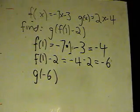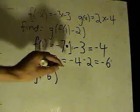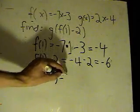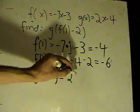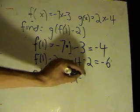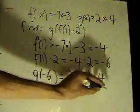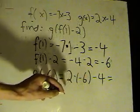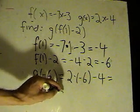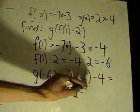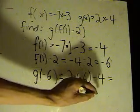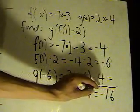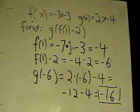So I'm doing this step by step. I have equals, and I put in the unknown: minus 6. So I have 2 times minus 6, minus 4. That gives me minus 12 minus 4. And minus 12 minus 4 equals minus 16. So I've done it one step at a time and come up with the answer: minus 16.